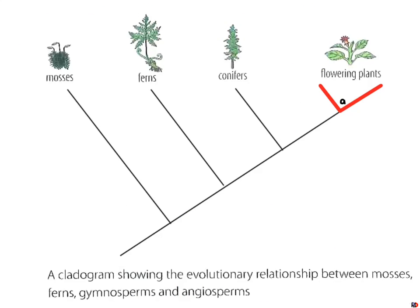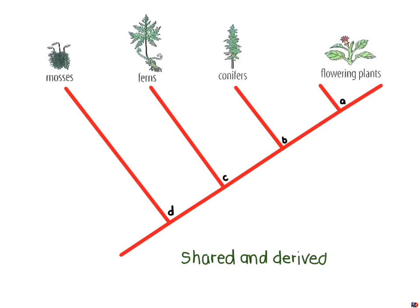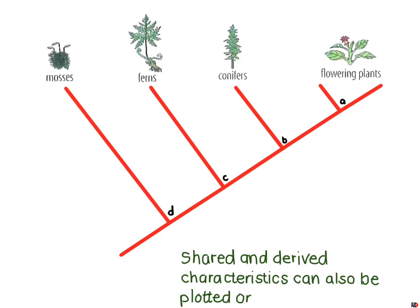Going back to our diagram of the mosses, ferns, conifers, and flowering plants: the most recent common ancestors are labelled A, B, C, and D. Node A is where monocots and dicots split into two separate taxa. B is where conifers diverged from the flowering plants. C is where ferns separated from the conifer–flowering plant lineage, which at that stage had not yet differentiated. D marks where mosses separated from the other lineages.